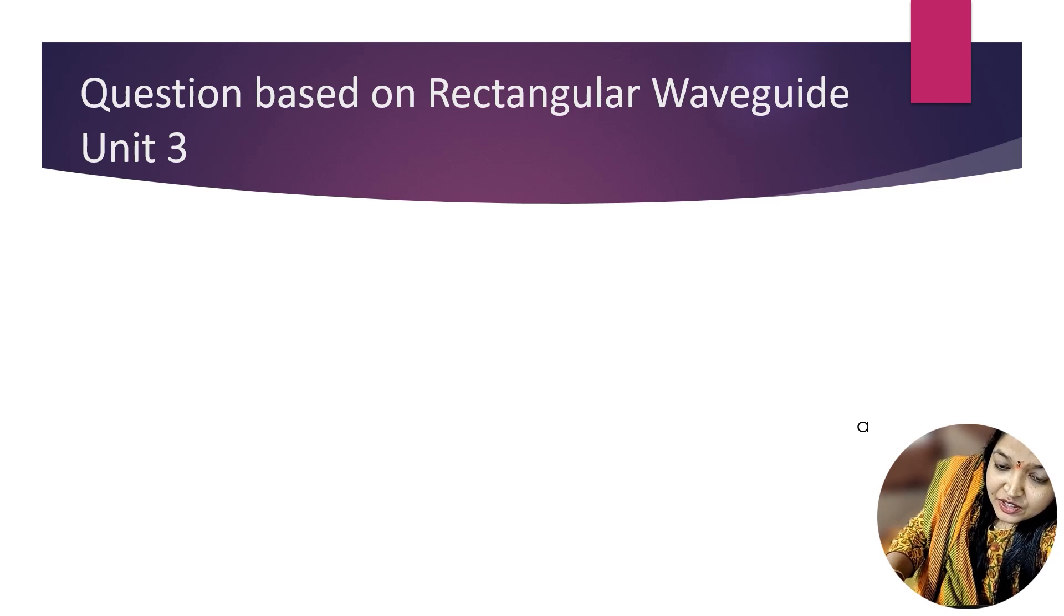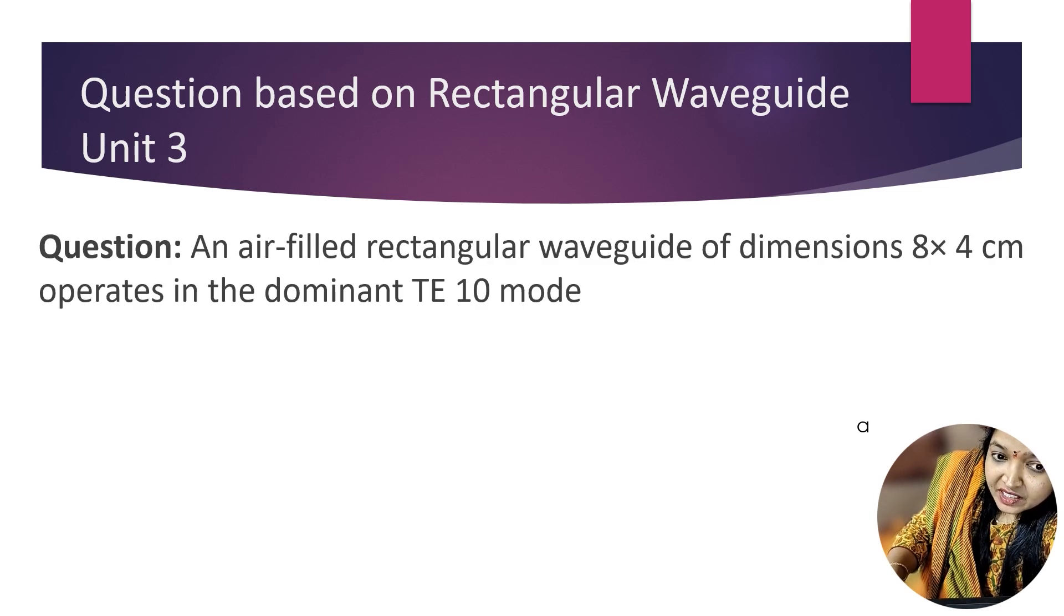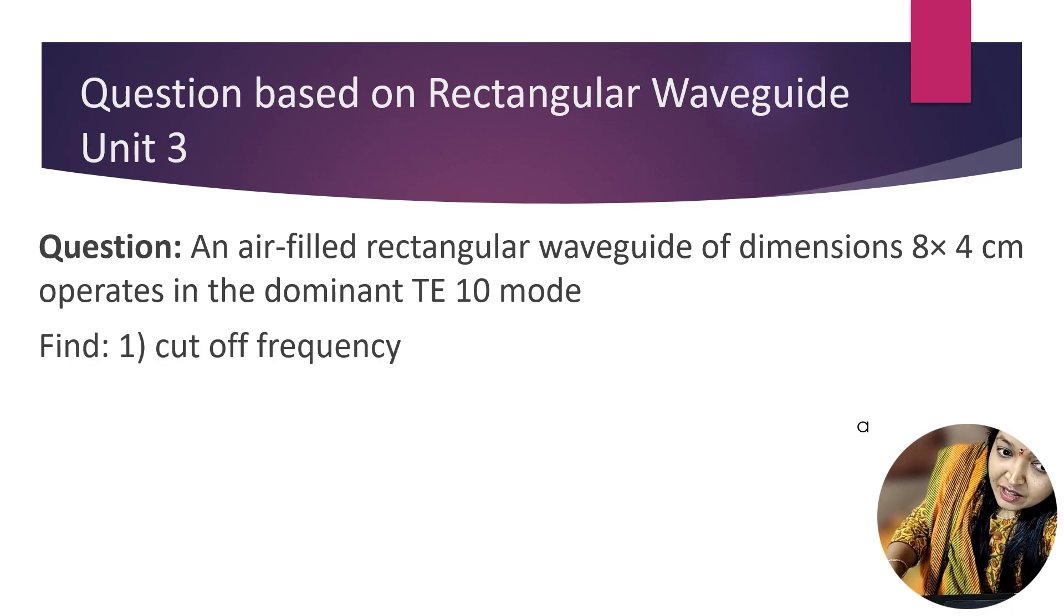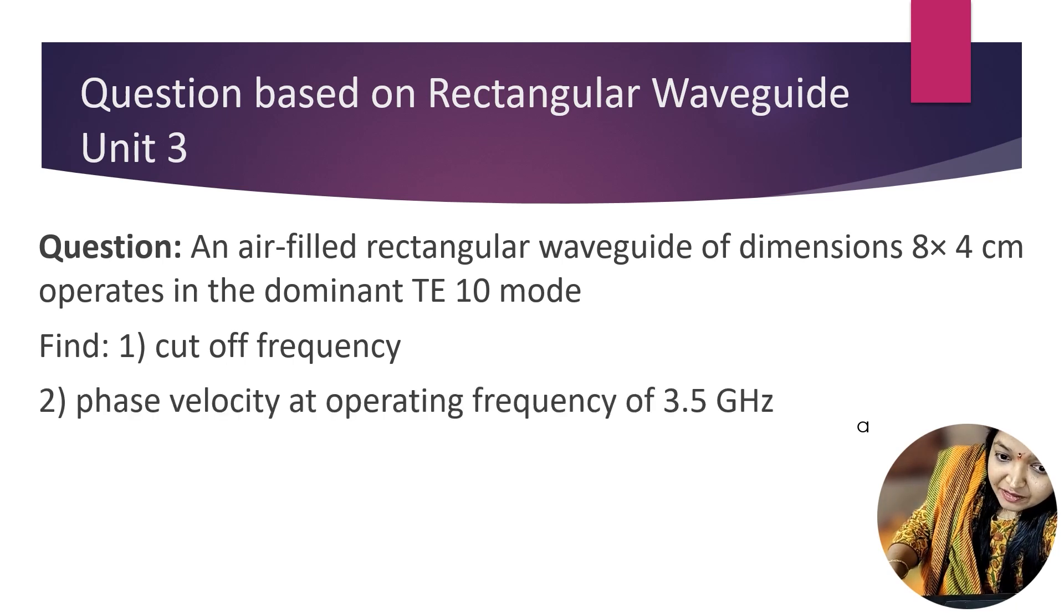The third question in this InSem paper is based on rectangular waveguide, which is Unit 3. The question is: an air-filled rectangular waveguide of dimensions 8×4 cm operates in the dominant TE₁₀ mode. Calculate cutoff frequency, then phase velocity at operating frequency of 3.5 GHz, and guide wavelength. This question is for 6 marks.